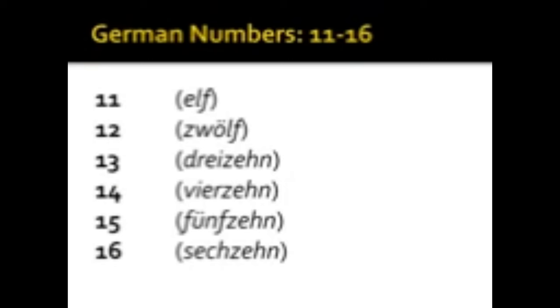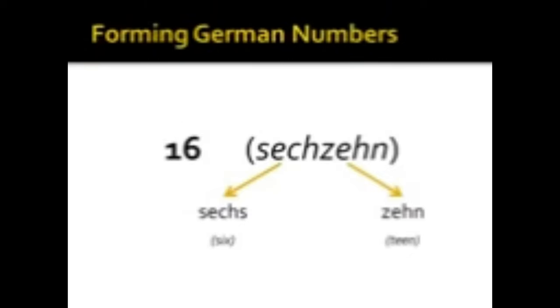So let's take a look at number sixteen, for instance. Sechzehn, take that word apart. We have sechs, which is six, and zehn, which is ten, which will be analogous to the English teen. And this continues on to the numbers seventeen, eighteen, nineteen, twenty.